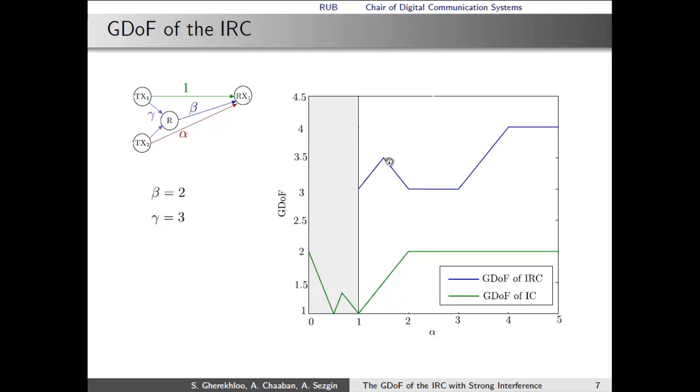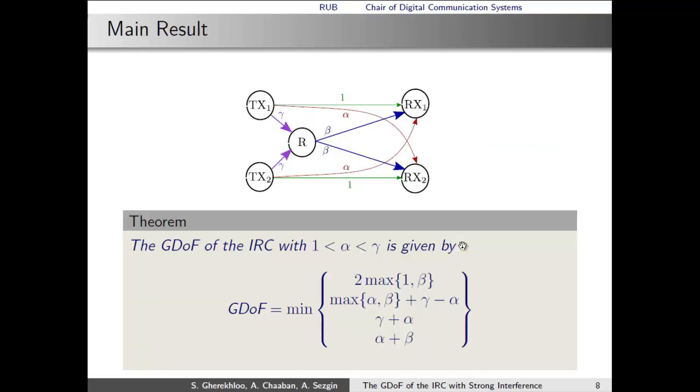Here, the GDoF decreases as a function of alpha, then stays constant, and then continues to increase again as a function of alpha. This is the GDoF characteristic which we do not observe in the basic interference channel in the strong interference region. Before trying to get insight why the GDoF behaves in this way, let us first state the main result of the work.